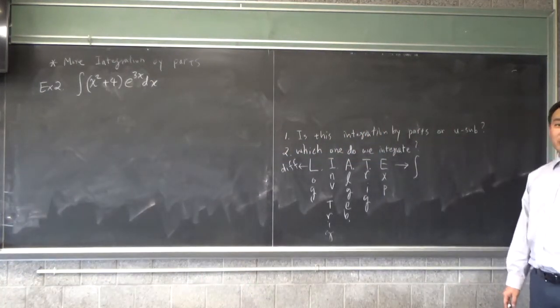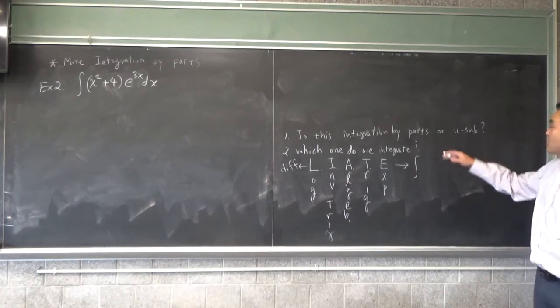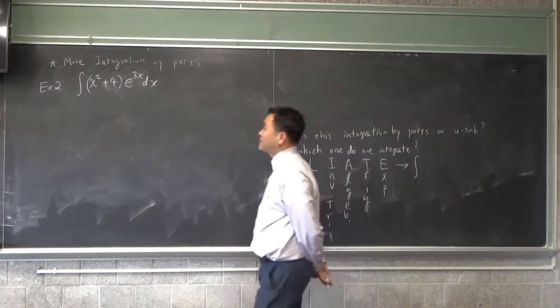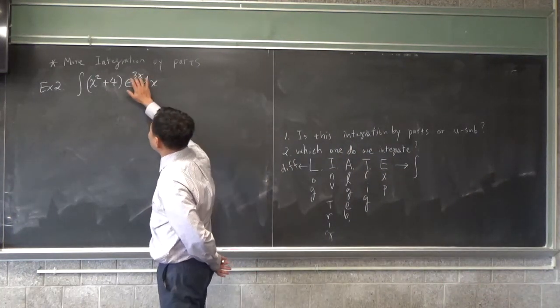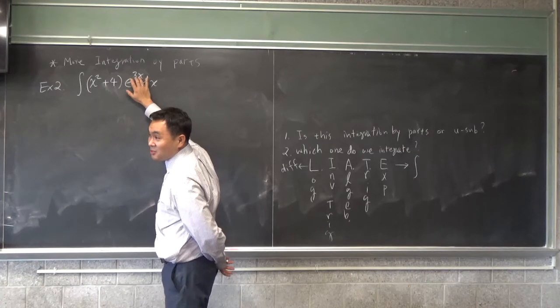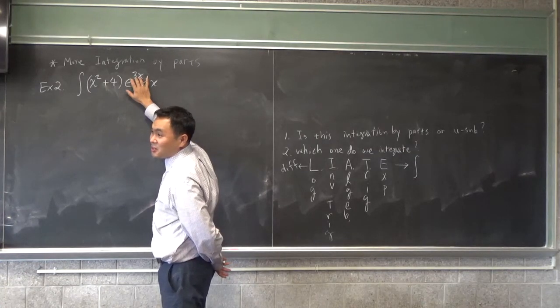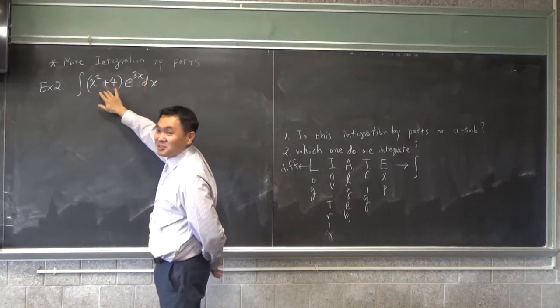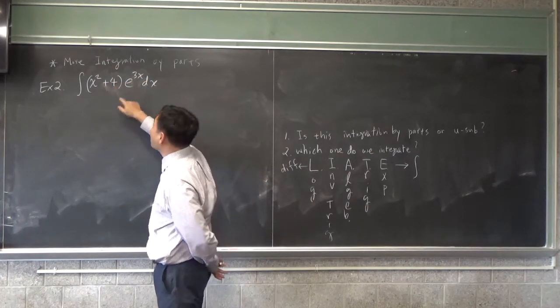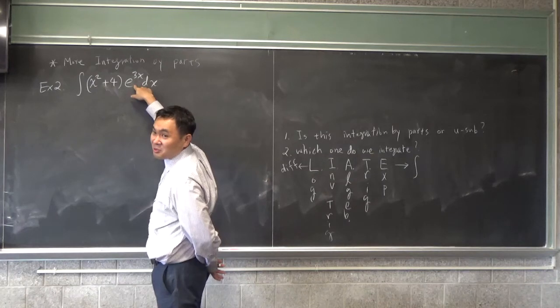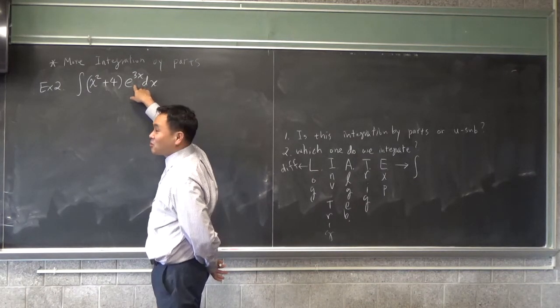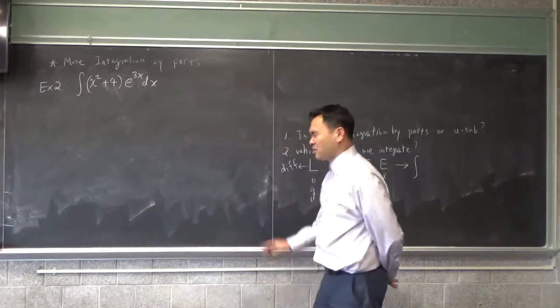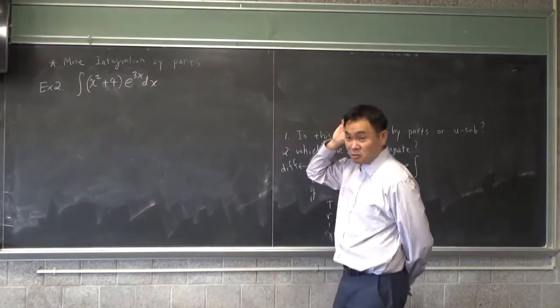Which one should we, oh, first, is this one which integration by parts is used? Well, I do see an inside function, right, 3x, but then the derivative is not this one. And plus, it's not hard to integrate e to 3x. That's not a problem. So in our case, this would be integrated by parts, not u-substitution, okay?